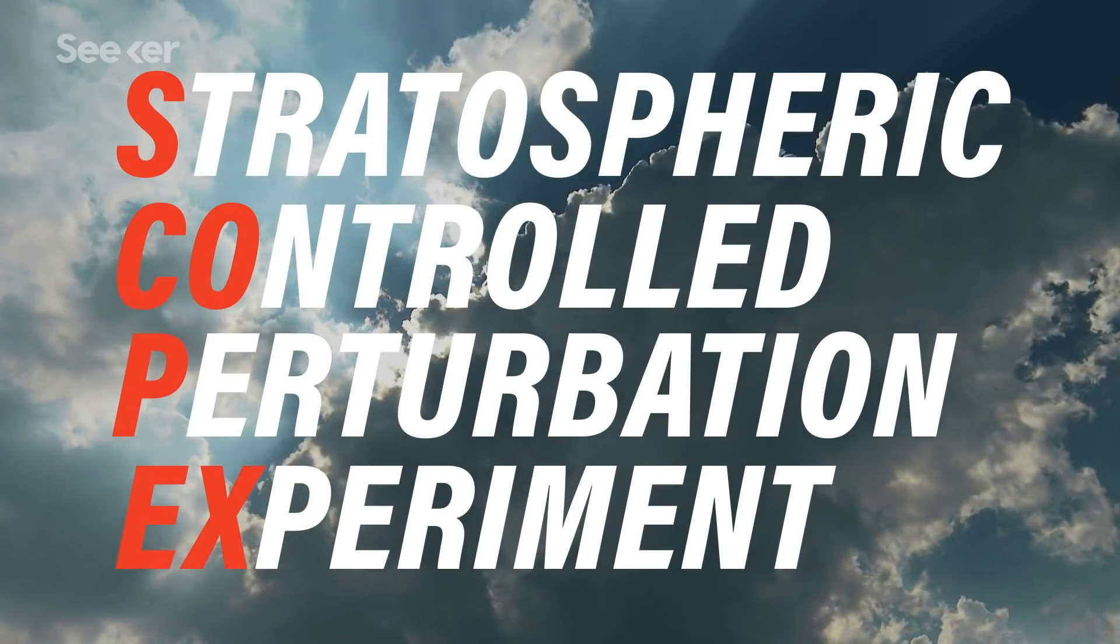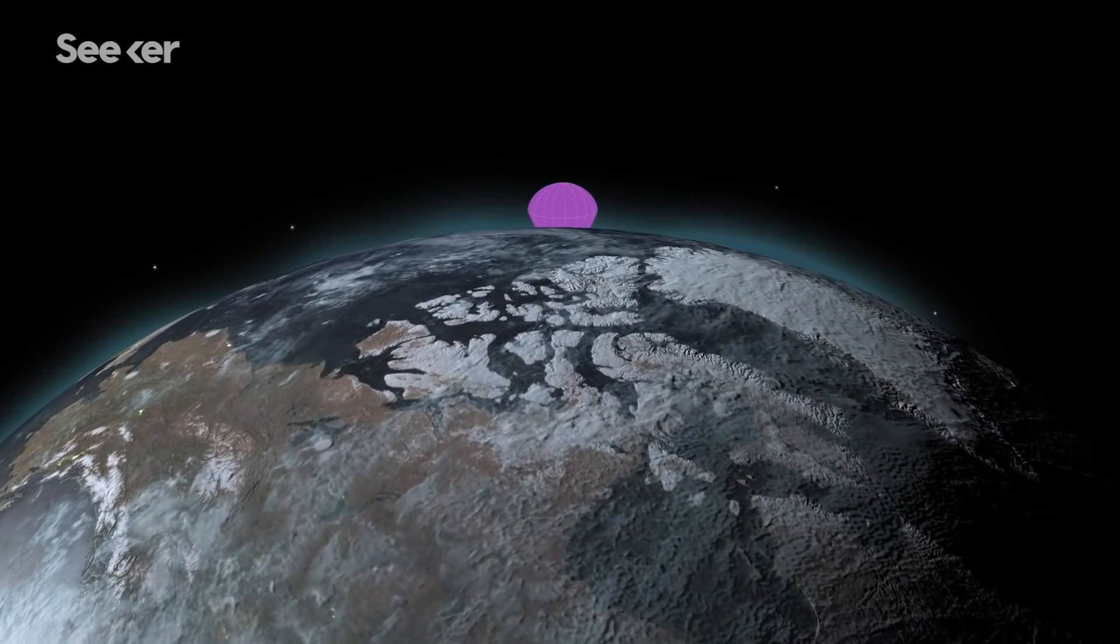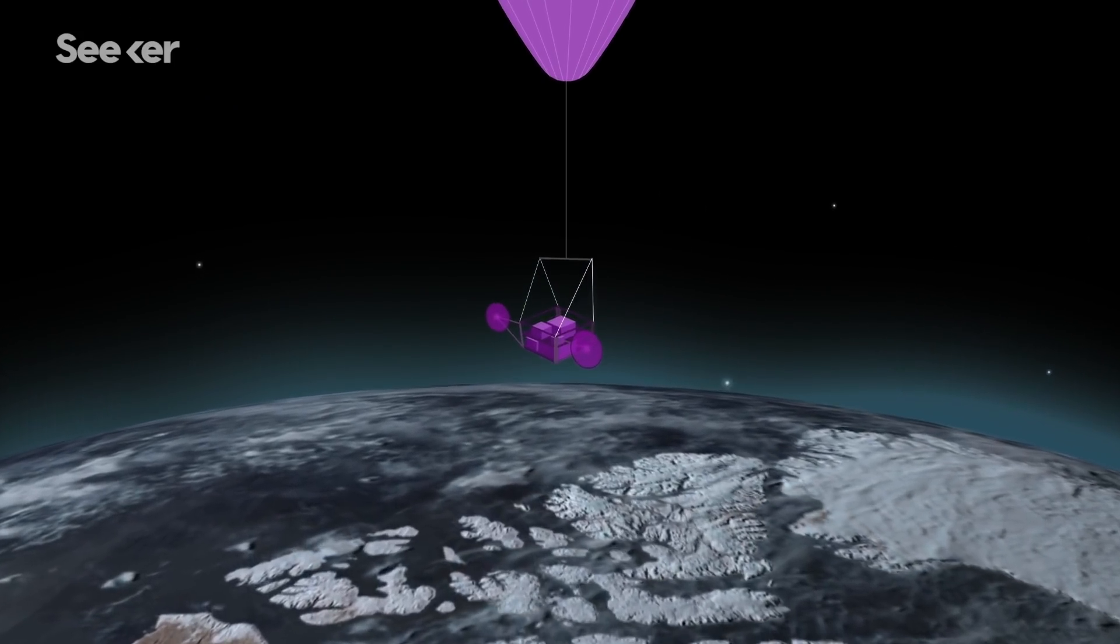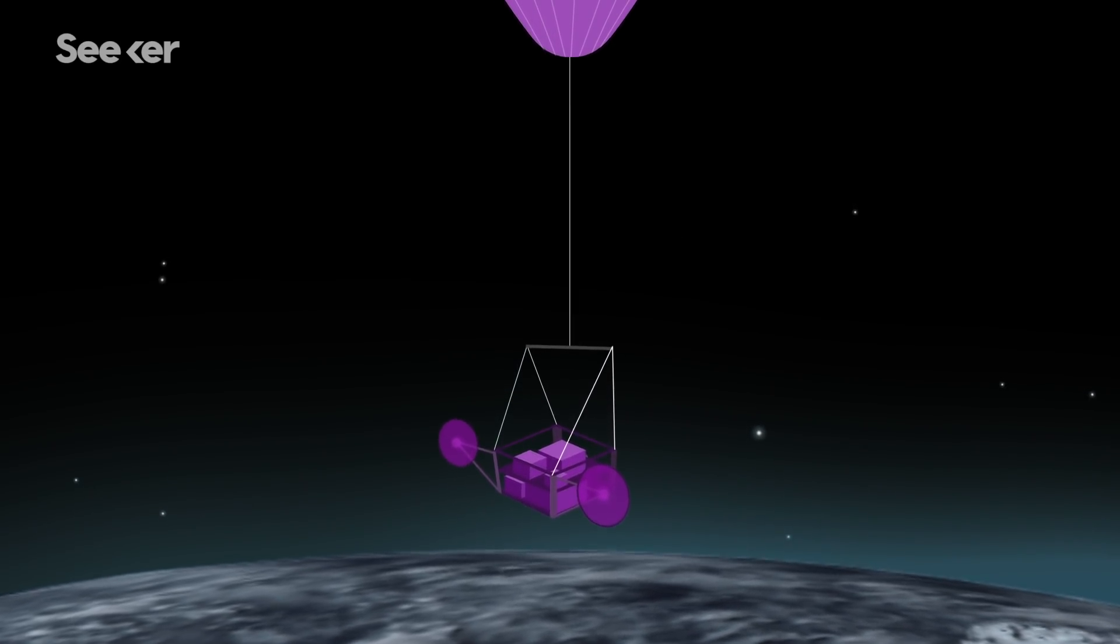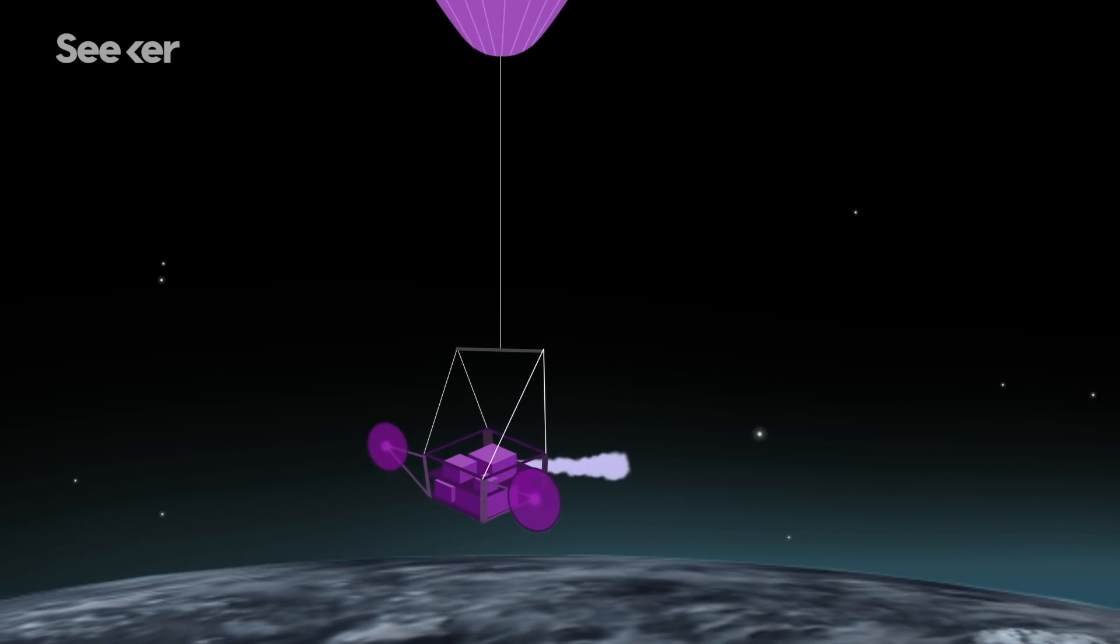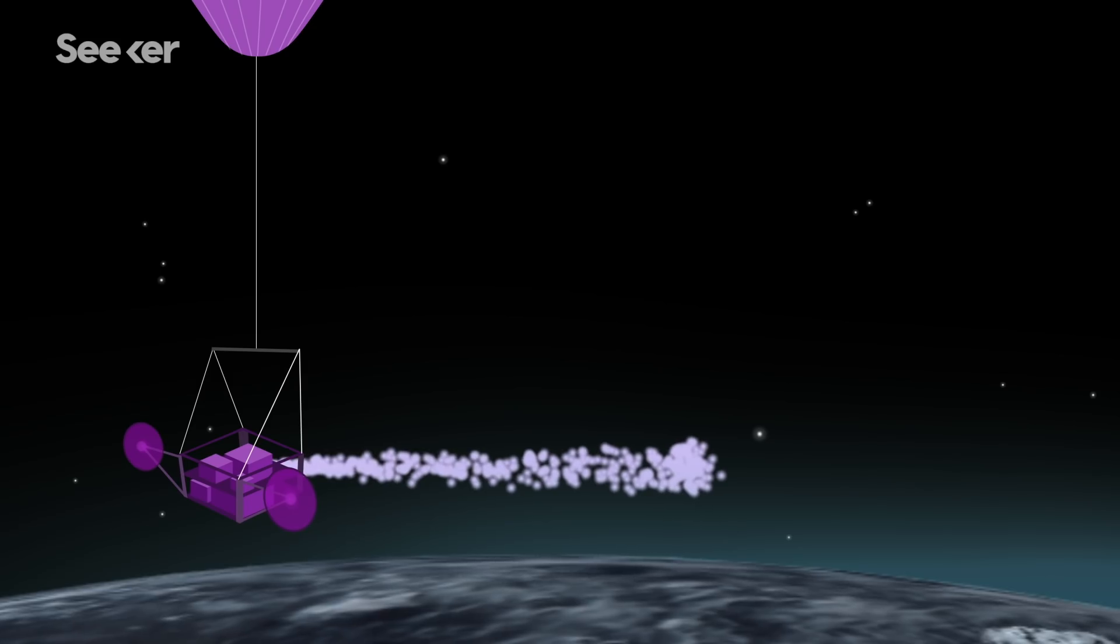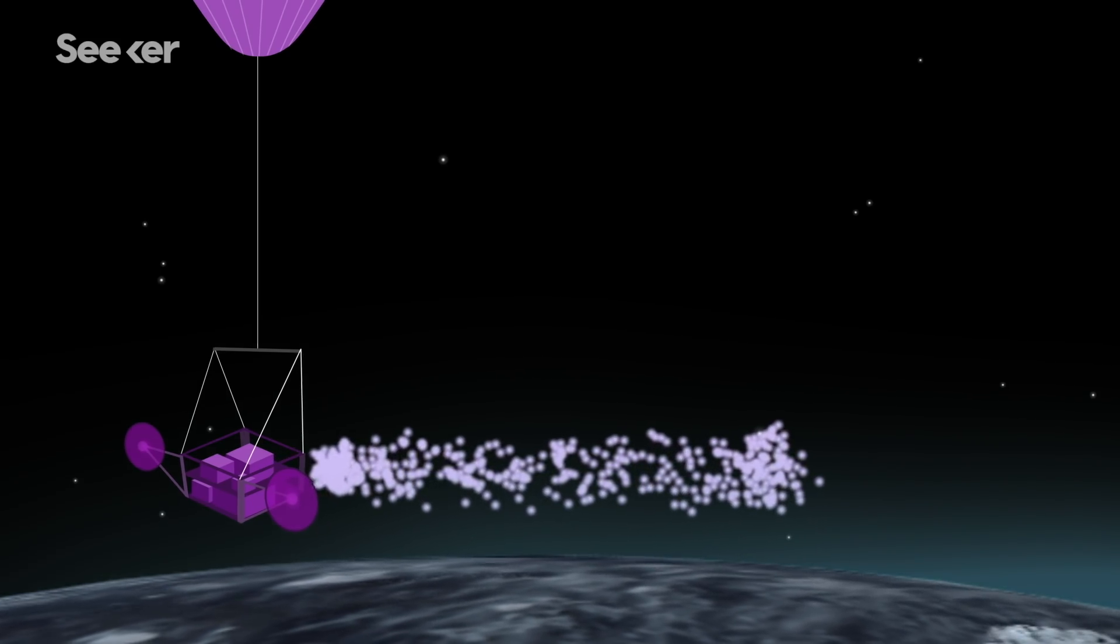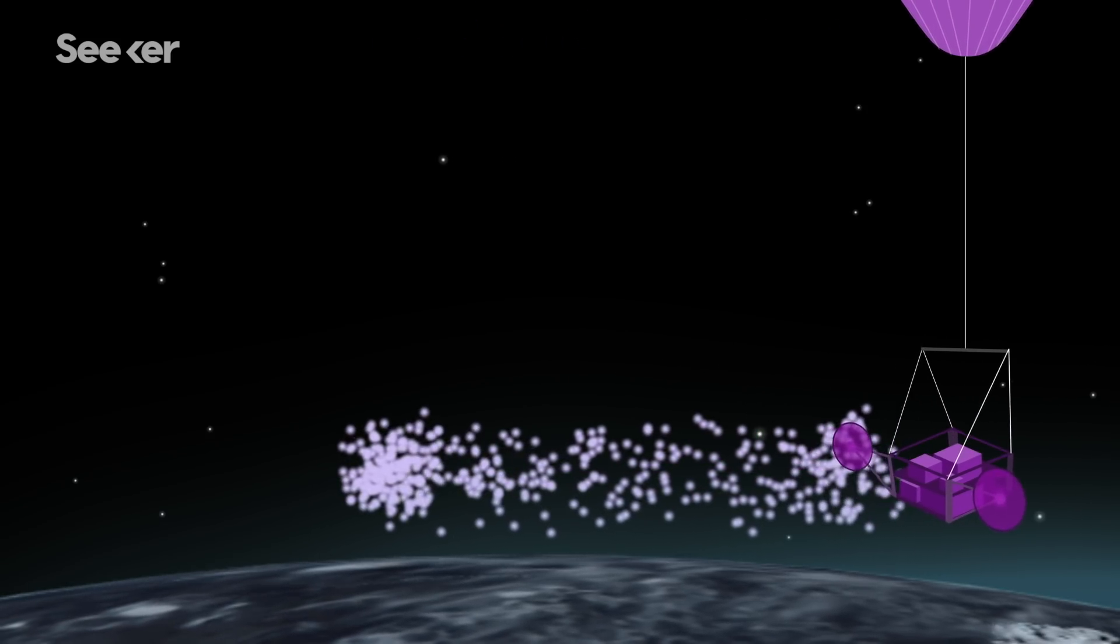SCoPEx is the stratospheric controlled perturbation experiment. We're going to have a balloon that's going to be at 20 kilometers. Below that, we're going to have what we call an equipment gondola that's sort of hanging here. It will have all the instrumentation in it. So in there, we're going to have a system to disperse aerosols, a few hundred grams of calcium carbonate, less material than a normal airplane flight actually puts out in the atmosphere. It makes what we call a plume behind it. What we want to do is then turn around and sort of fly back through this plume at various points in it.